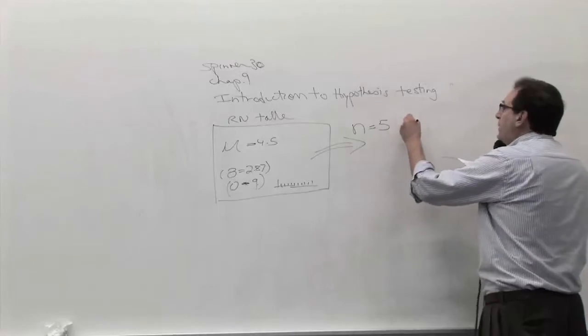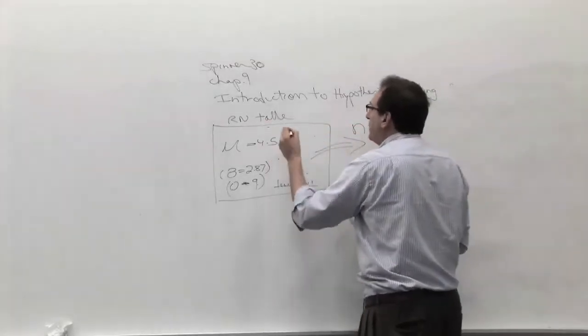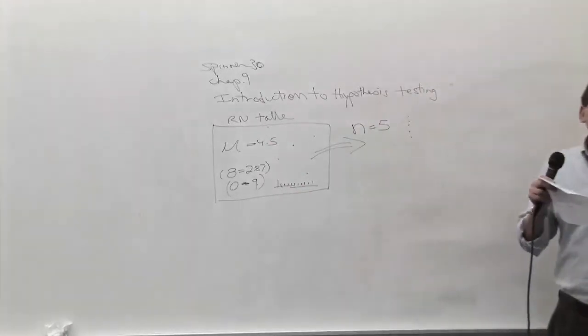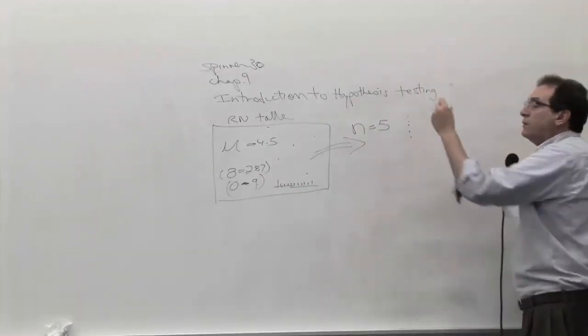So you take the five numbers. Basically, you want it to be random, so you pick a number here, a number here, a number here. You want it to be random so that it's representative. You don't want to just pick all the zeros or something like that.